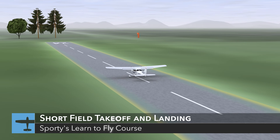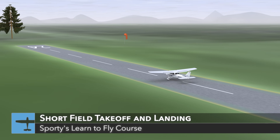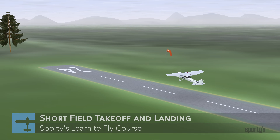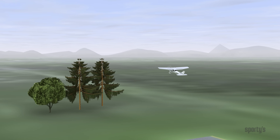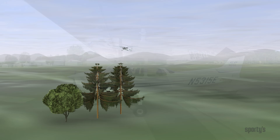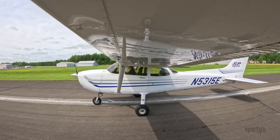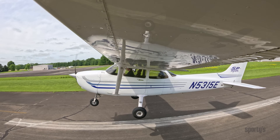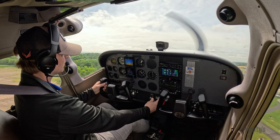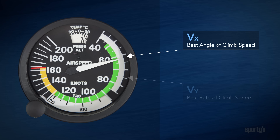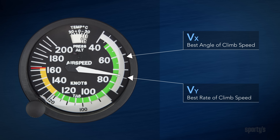Let's start with the procedure for a short field takeoff and maximum performance climb. This technique should be used when operating from runways where the takeoff area is short or when there are obstructions in the departure path. To depart such an area safely, a pilot must control attitude and airspeed so that takeoff and climb performance results in the shortest ground roll and the steepest angle of climb. To accomplish maximum performance takeoffs, the pilot must be familiar with the use and effectiveness of the best angle of climb speed and best rate of climb speed for the airplane.